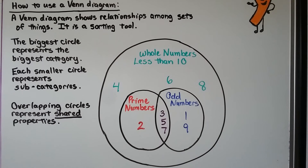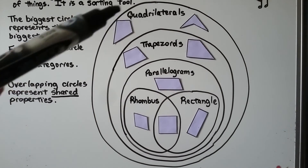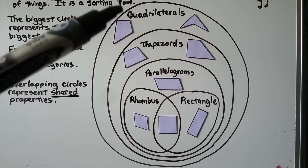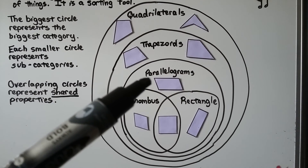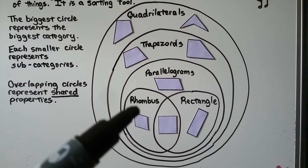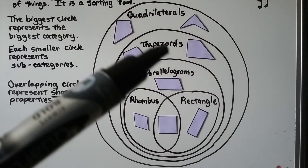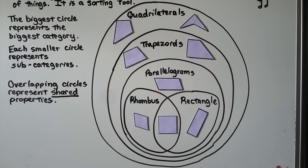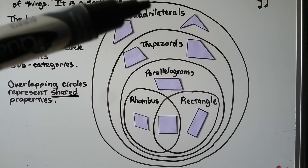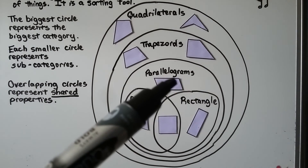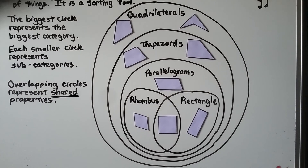We can do the same with quadrilaterals. The biggest circle represents quadrilaterals, inside that are trapezoids, inside that are parallelograms, and inside that are rhombuses and rectangles. A square is a rhombus, a rectangle, a parallelogram, a trapezoid, and a quadrilateral — it's all of them. A rhombus is a parallelogram, trapezoid, and quadrilateral. A rectangle is a parallelogram, trapezoid, and quadrilateral. A parallelogram is a trapezoid and a quadrilateral, and a trapezoid is a quadrilateral.